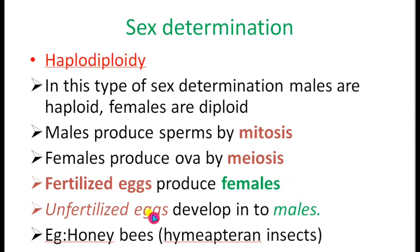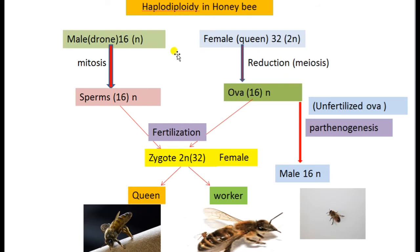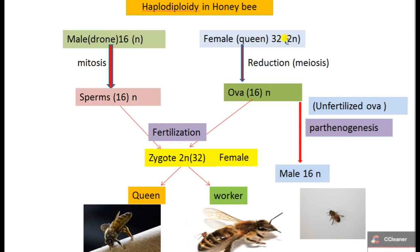Unfertilized eggs develop into males or drones. Honeybees have 32 chromosomes, which is the diploid number. That means 16 pairs of chromosomes are present in females, and only 16 chromosomes — the haploid number — are present in males. So males are haploid in nature and females are diploid in nature.